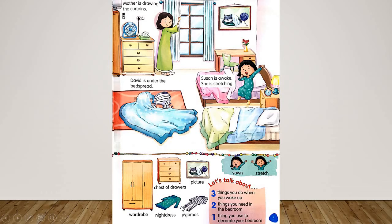So these are some words we learned today from our book World's Treasure. Let's read again: Mother is drawing the curtains. David is under the bedspread. Suzan is awake, she is stretching. Wardrobe, night dress, pyjamas, chest of drawers, picture, yawn, and stretch.